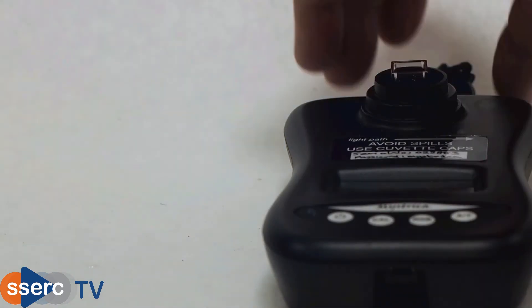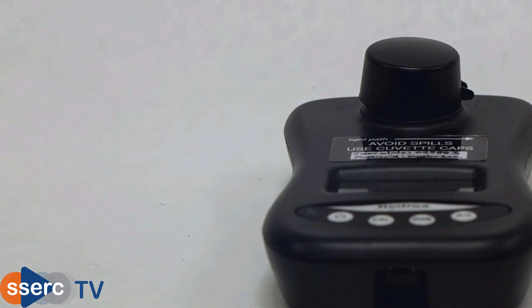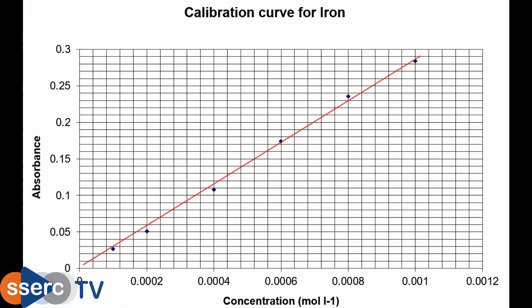Plot a graph of the readings from the iron nitrate standards and draw a straight line through them. You can now use this to work out the concentration of the iron in your tea sample from its absorbance, and from that you can work back to the concentration of iron in the tea itself.